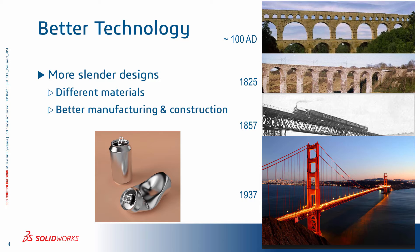A good example of a slender bridge is the Tacoma Narrows Bridge collapsing in 1940. Although the cause in that case was wind-structure interaction and not buckling per se, the slenderness of the Tacoma Bridge played an important role, and this is why we should investigate buckling whenever we have slender designs.